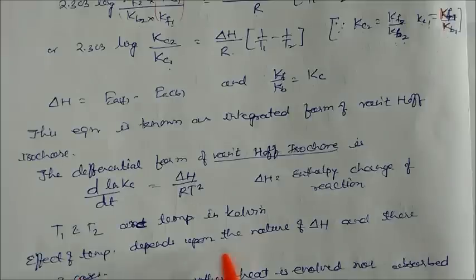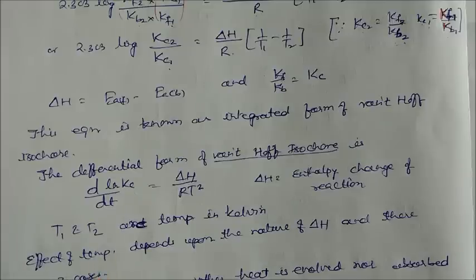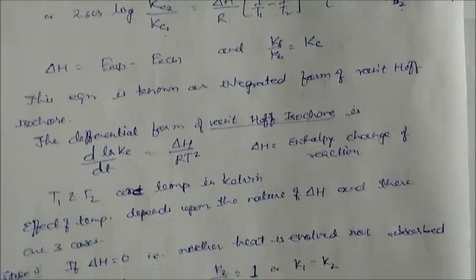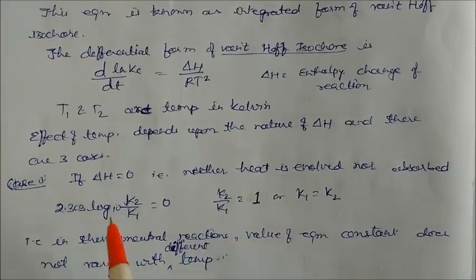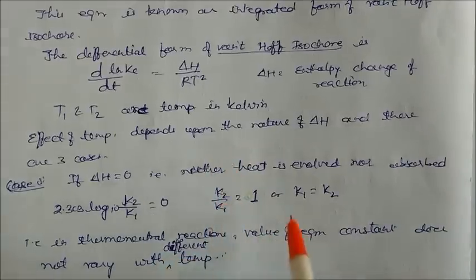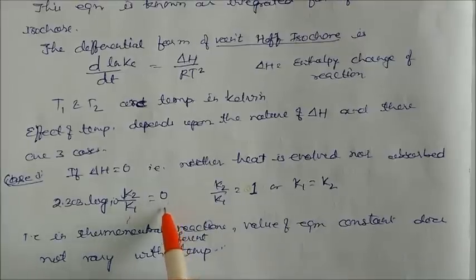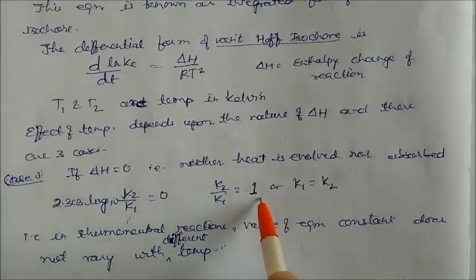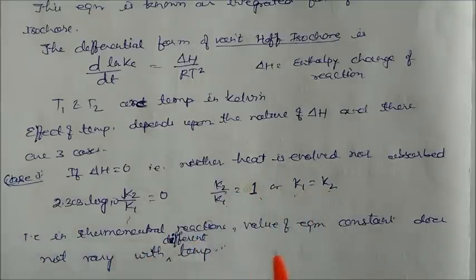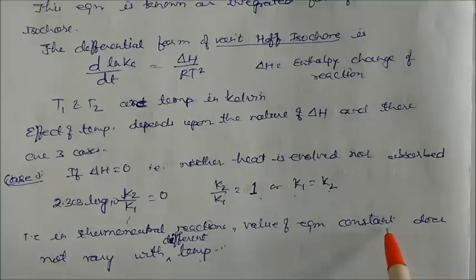The effect of temperature on Kc depends on the nature of ΔH. There are three cases. Case one: if ΔH = 0, neither heat is evolved nor absorbed, then 2.303 log(K2/K1) = 0, meaning K1 = K2. The equilibrium constant does not change with temperature — this is a thermoneutral reaction.